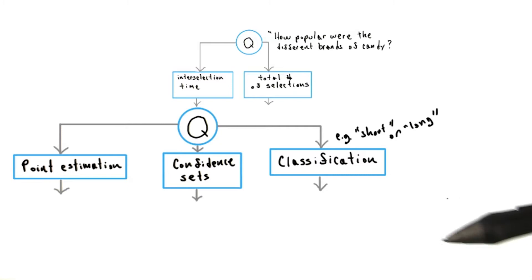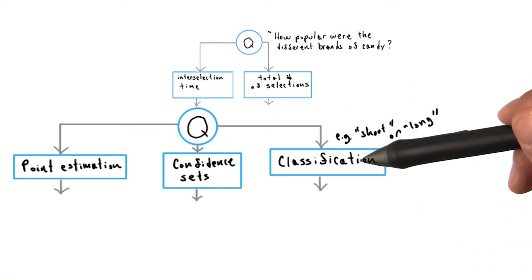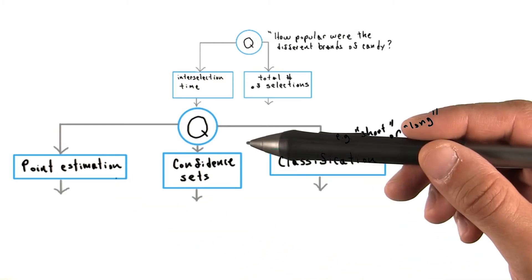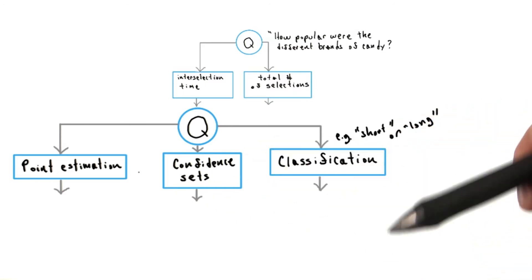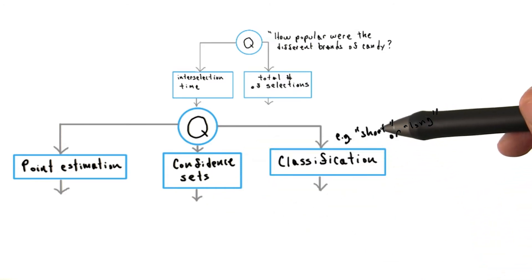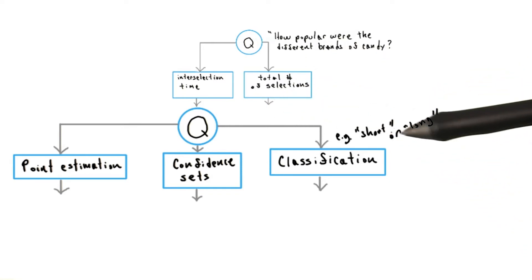Classification, in which we choose various descriptive classes which may not be ordered, and try to classify interselection time into one of those classes. So for example, in contrast with point estimation, in which we explicitly try to come up with an estimator for the actual value of interselection time, in classification we may choose just broad categories like short or long, and try to match the actual quantity to one of those classes.